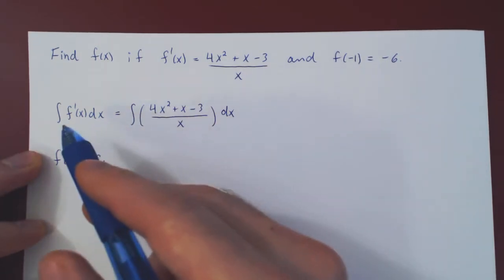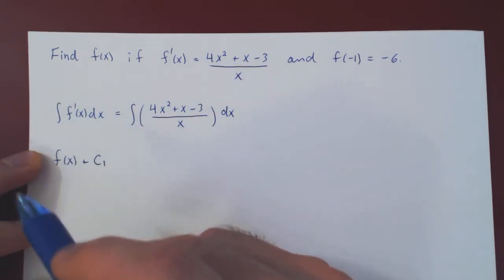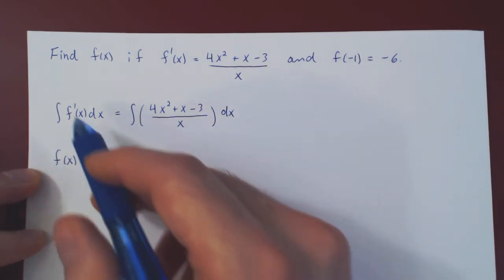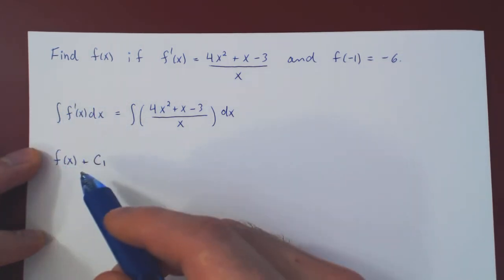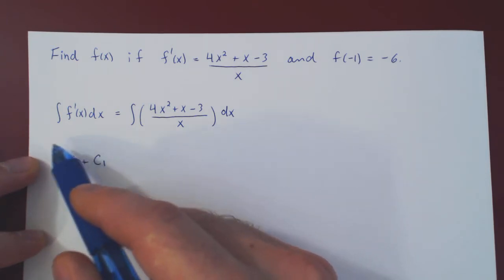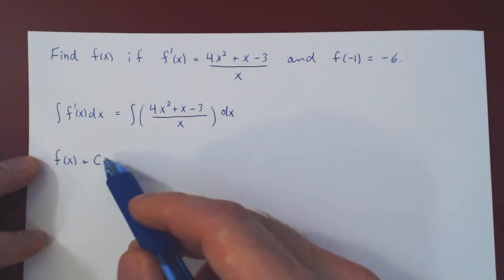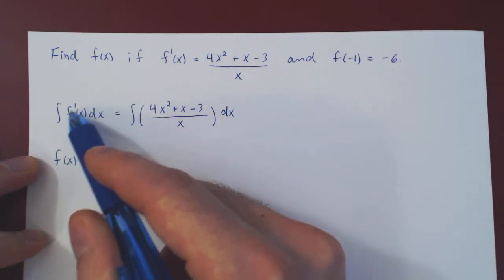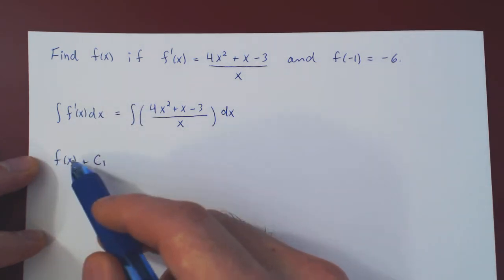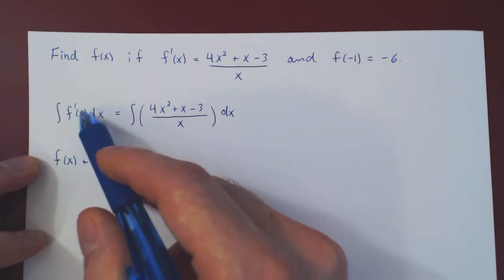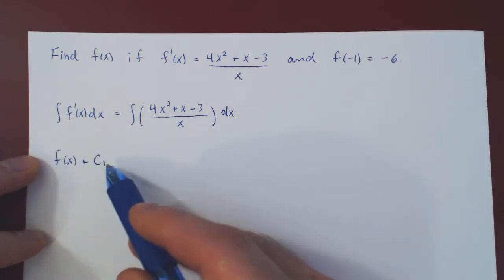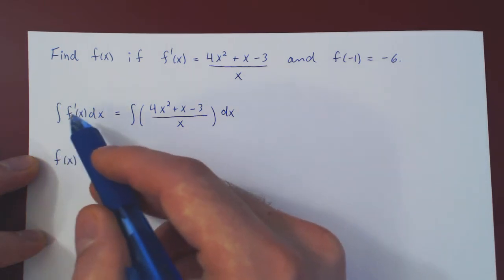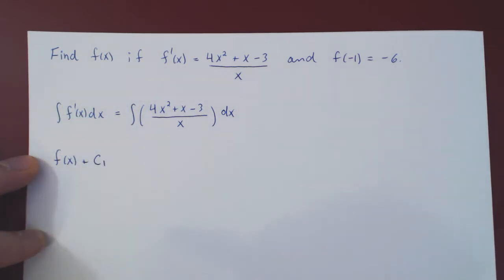Or you can think of it as the integral is an antiderivative, or actually all antiderivatives of the original function. So you're looking here for a function up to an arbitrary constant whose derivative is the derivative of f(x). Well, clearly, if you differentiate f(x), you get the derivative of f(x). And that's the left-hand side, confirming again that the integral is the inverse operation of differentiation.